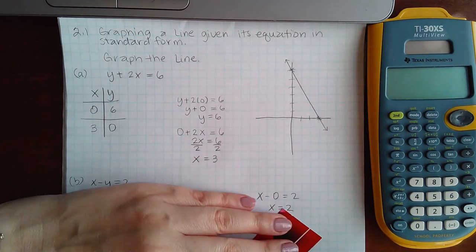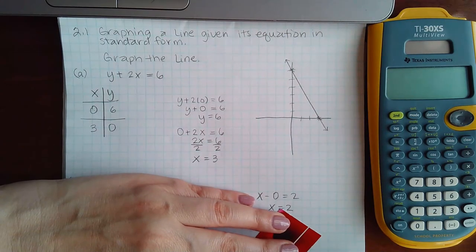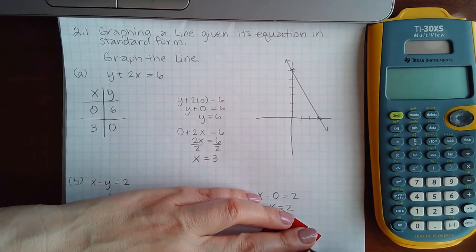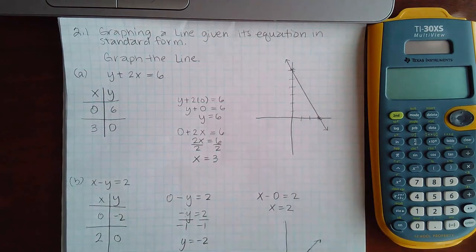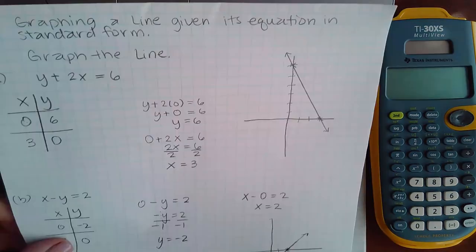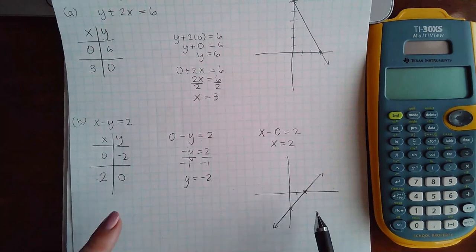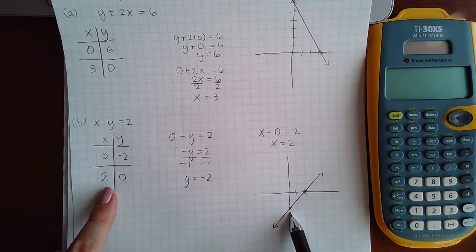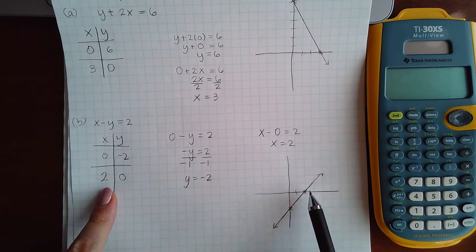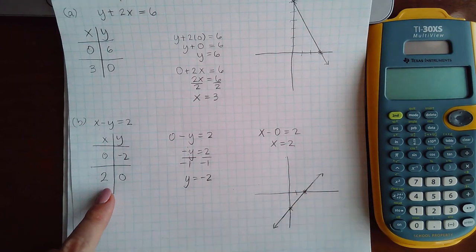And then Alex will draw the line for you. For me I'm doing it on paper so I've got to draw my own line. Oops, you can't see. So I plotted the point 0 and negative 2 and then I plotted the point positive 2 and 0 and then just connected the dots.